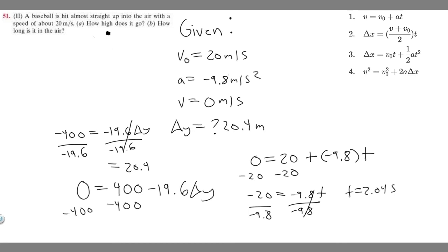So if going up is 2.04 seconds, going down is also 2.04 seconds. We can find the whole amount of time just by multiplying by 2. So 2.04 times 2 is going to be 4.08.